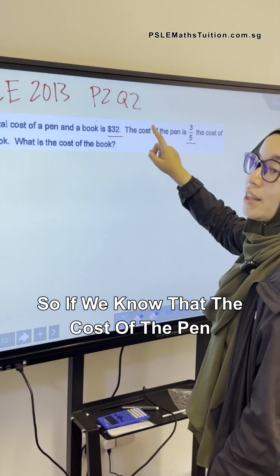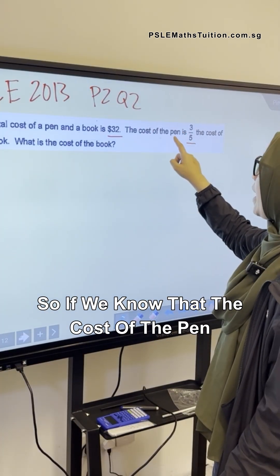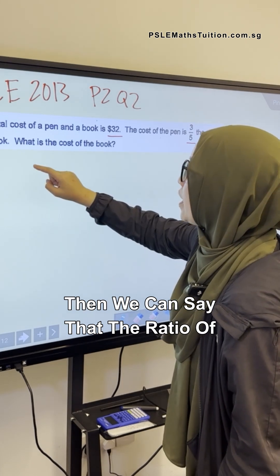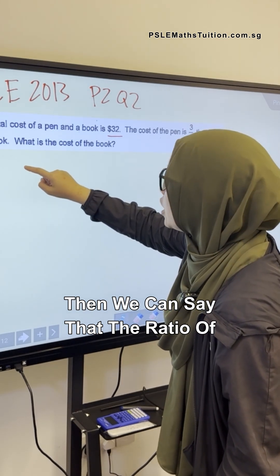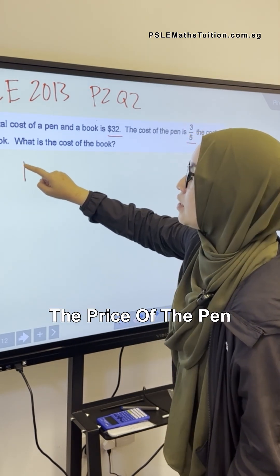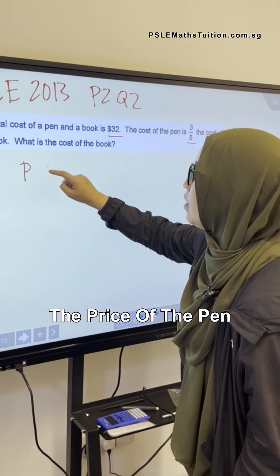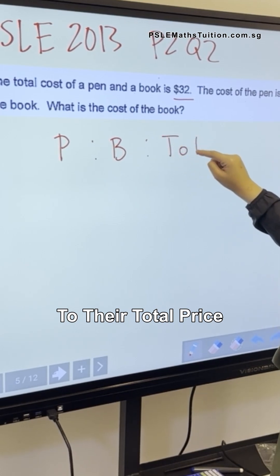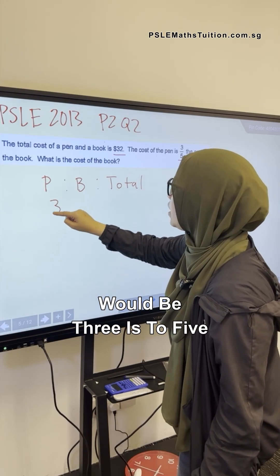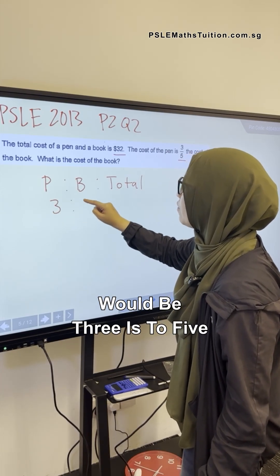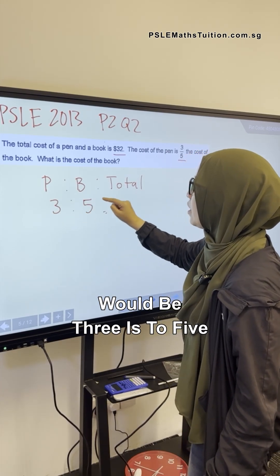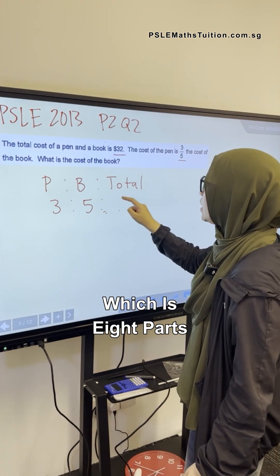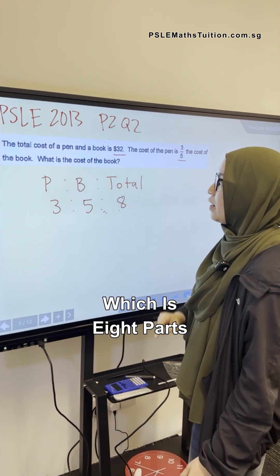If we know that the cost of the pen is three-fifths the cost of the book, then we can say that the ratio of the price of the pen to the book to their total price would be three is to five, and the total would be three plus five, which is eight parts.